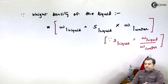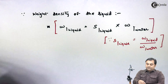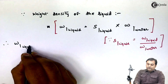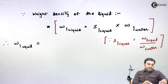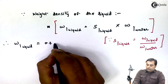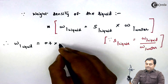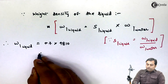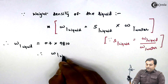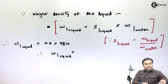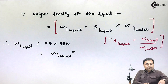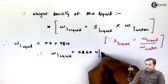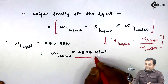From this relation we get the weight density of the liquid. Therefore, the weight density of the liquid equals specific gravity (0.7) multiplied by the weight density of water, which is taken as 9810 N/m³. From this I get the specific weight of the liquid, and the answer comes out to be 6867 newton per meter cube. That is my second answer.